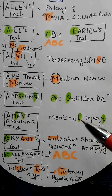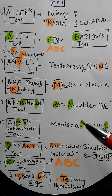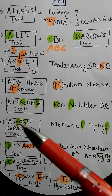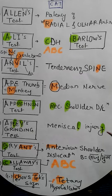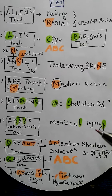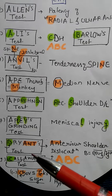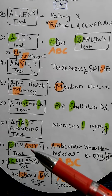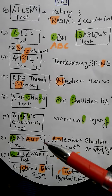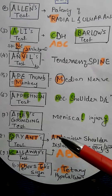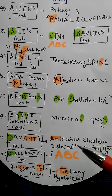Apley's grinding test is for meniscal injury — this is L, this is Y. I know it's weird but you need some tool to recall it. Bryant's test — B-R-A-N-D — A and T: anterior shoulder dislocation.